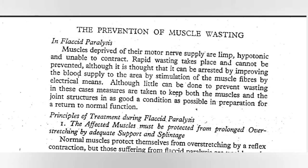In this case, we will see the prevention of muscle wasting. In prevention, we will see the flaccid paralysis. Muscles deprived of their nerve supply are limp, hypotonic, and unable to contract. Rapid wasting takes place and cannot be prevented.